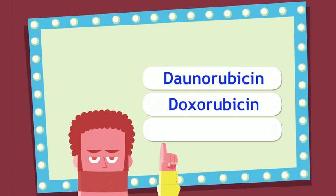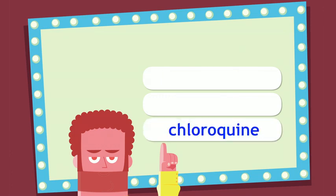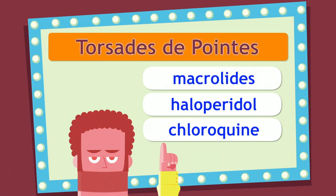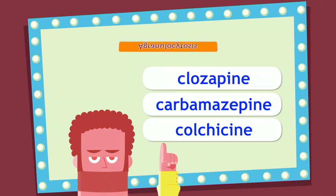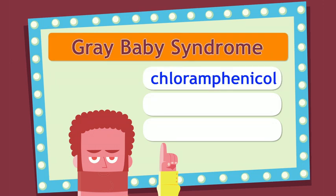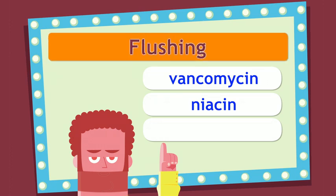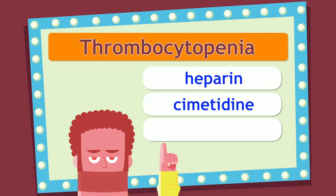Game show #1 review: Doxorubicin and daunorubicin — dilated cardiomyopathy. Chloroquine, haloperidol, macrolides — torsades de pointes (prolonged QT interval). Colchicine, carbamazepine, clozapine (all C's) — agranulocytosis. Chloramphenicol — gray baby syndrome. Niacin and vancomycin — flushing. Cimetidine and heparin — thrombocytopenia.